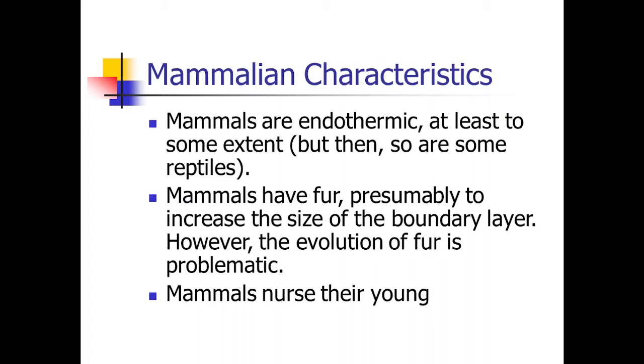So, one thing that goes along with endothermia is the presence of fur. So, all mammals, all mammals have fur. Even whales have fur if they have eyelashes. So, hair is a defining characteristic of the mammals. It is a problem in trying to explain the evolution of fur, but we'll address that in just a few moments. The other key component to being a mammal is that mammals nurse their young. All mammals nurse their young in one way or another.